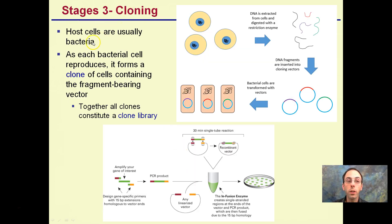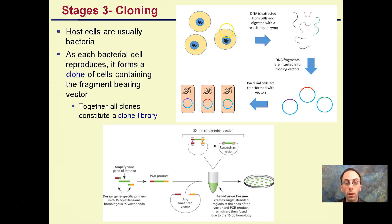Stage three is cloning. Host cells are usually bacteria. As the bacteria cell reproduces, it forms a clone containing the fragment-bearing vector. We use bacteria because they multiply so rapidly — for example, E. coli can multiply every 20 minutes. We're basically multiplying the gene of interest very quickly, generating a large number of plasmids and cloning those genes.